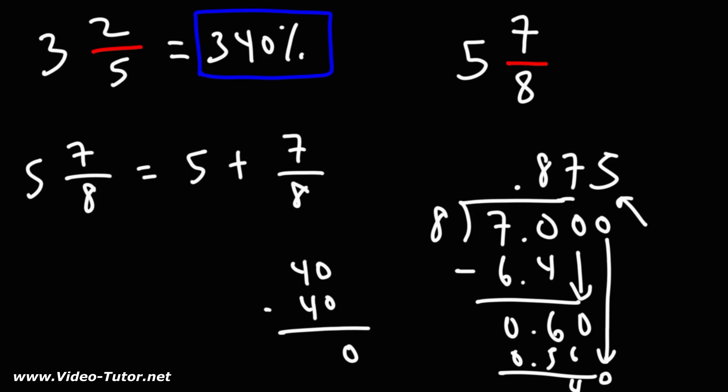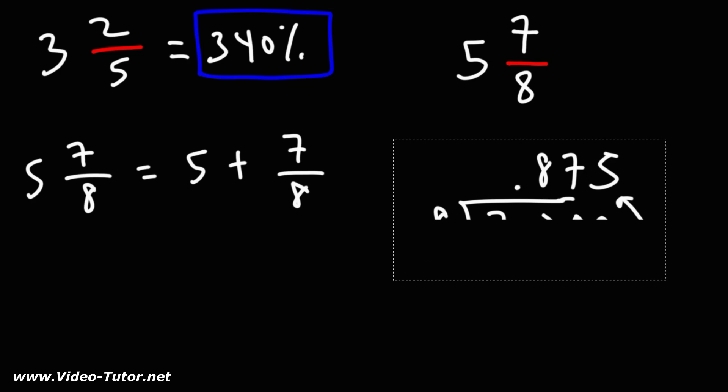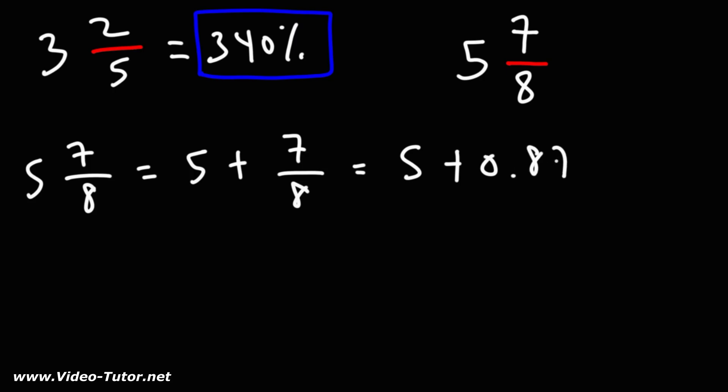7 over 8 is 0.875. So this mixed number is equal to 5.875.